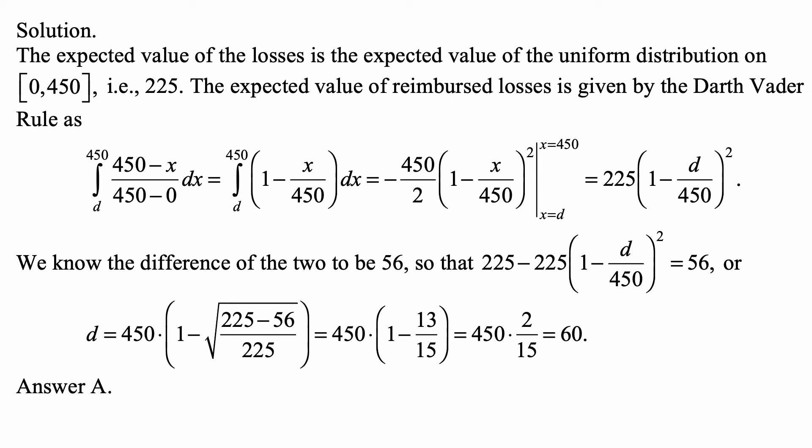We know the difference of the two to be 56, so that 225 - 225(1 - d/450)² = 56. This is a simple equation with d being the unknown, and we solve it for d. We get d to be equal to 450 times (1 - √((225 - 56)/225)).